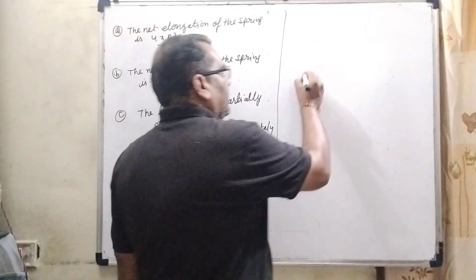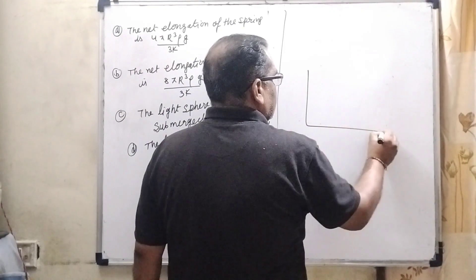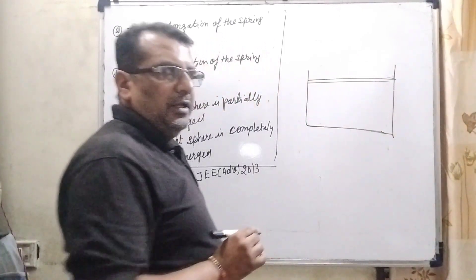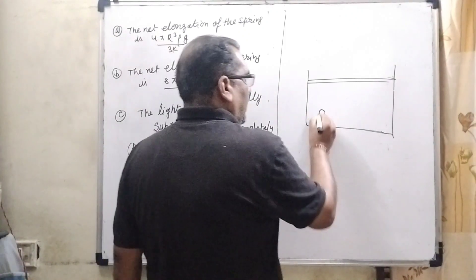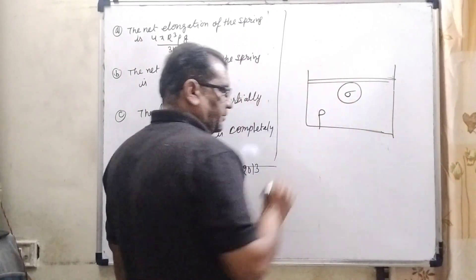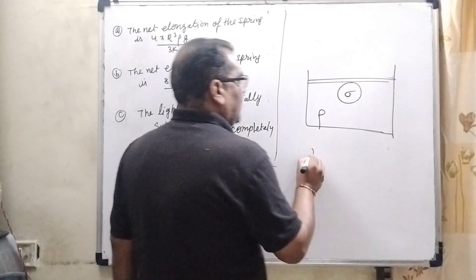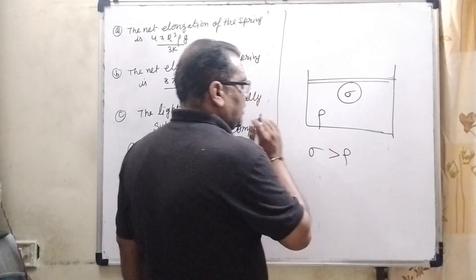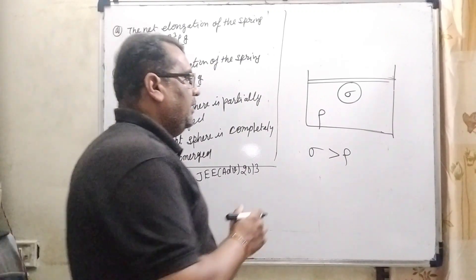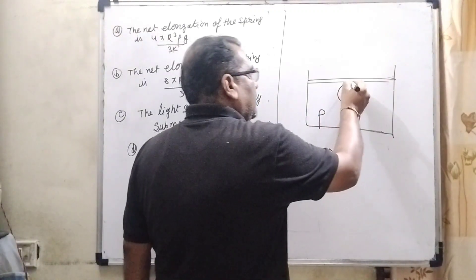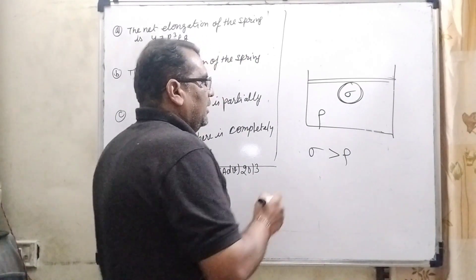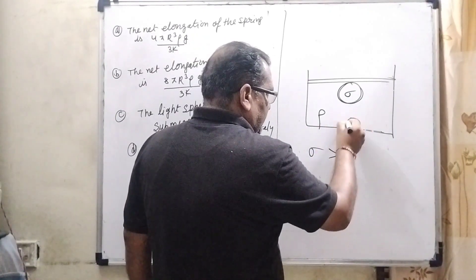What is the law of swimming? Consider a liquid filled in a container having density rho and a solid having density sigma. If sigma is greater than rho — meaning the density of the solid is greater than the density of the liquid — then this solid is completely submerged and moves downward.